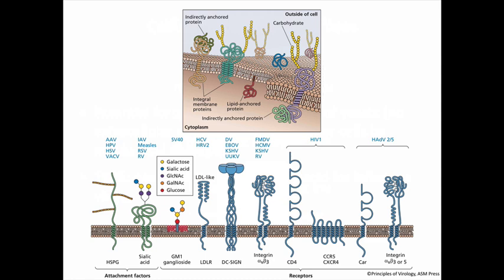Here are some examples of virus receptors. You can see there are all different types, ranging from heparan sulfate proteoglycan to sialic acids, gangliosides, and a variety of transmembrane proteins. Some of the ones we'll be talking about include HIV-1 and influenza virus binding to sialic acids. These include the low-density lipoprotein receptor LDL-R, important for cholesterol transport, as well as integrins, CD4, and chemokine receptors — all proteins with functions in the immune system. But viruses have evolved to bind to them.